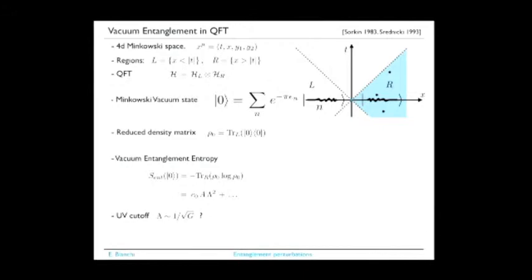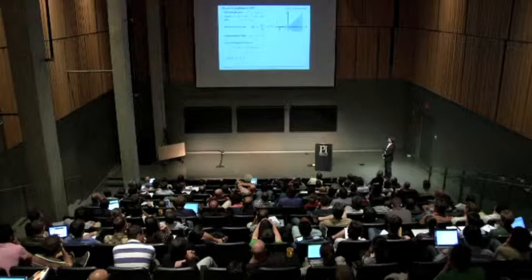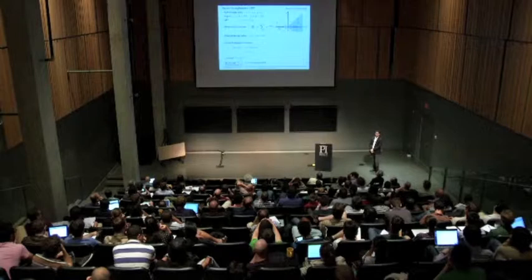The entanglement entropy of this reduced density matrix is, as is well known, divergent. It diverges quadratically with the UV cutoff and scales as the area of the entanglement surface—the separating surface. So it depends on the regularization. If you have a good reason to put the cutoff at the Planck scale, you may argue that this explains black hole entropy, since you would find an entropy that scales as area over Planck length squared.